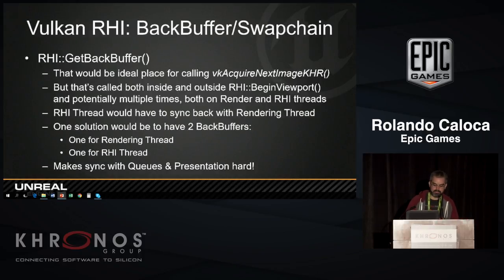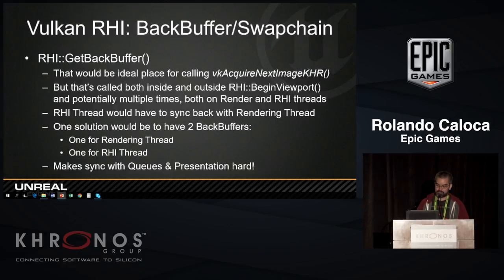This is an interesting bit we recently fell into. We have a function on the RHI called get back buffer, related to how the presentation system works. You would have thought this was a good place to call vkAcquireNextImage, but for us this is called inside and outside begin/end viewport, and end viewport is where we do the present. It's called multiple times and on both the render and the RHI threads.